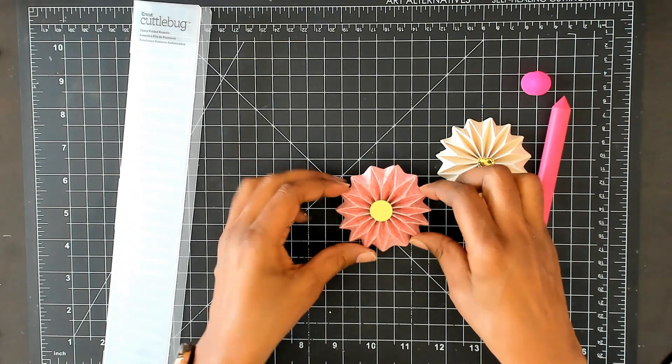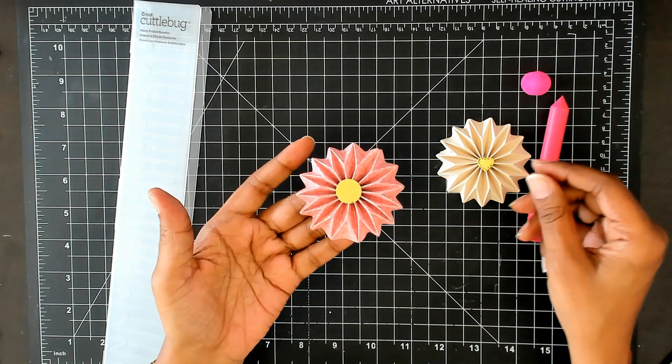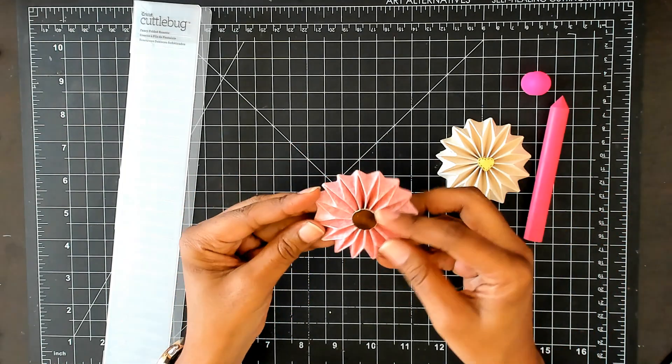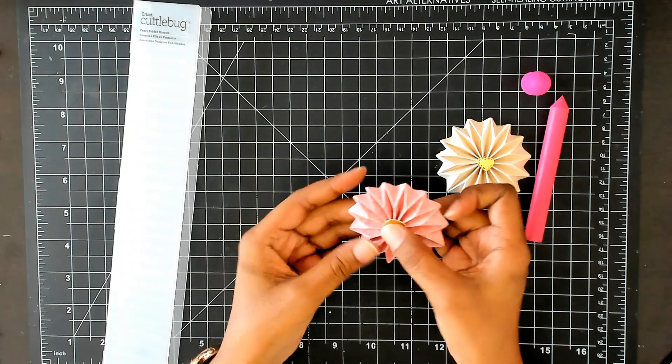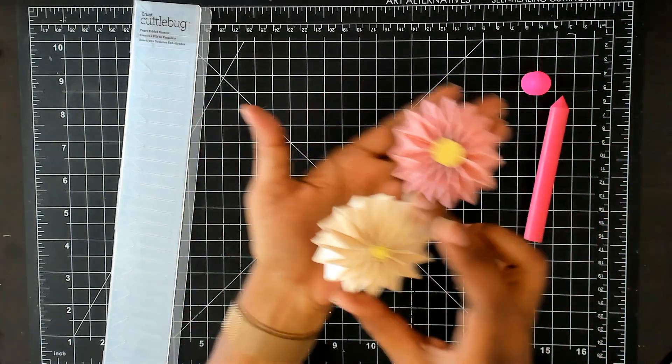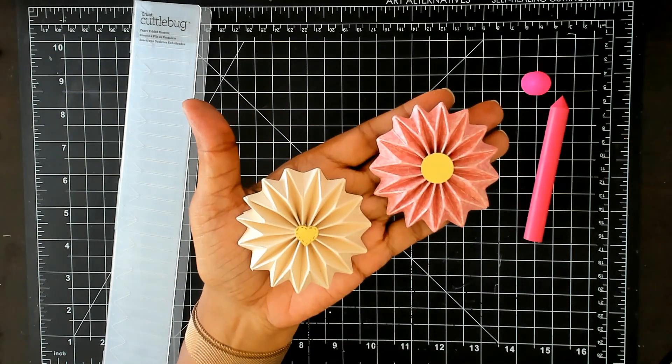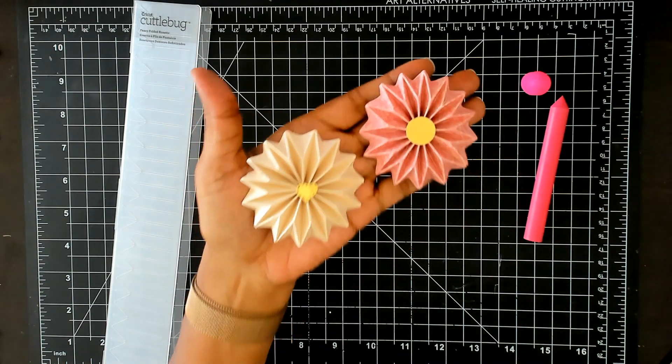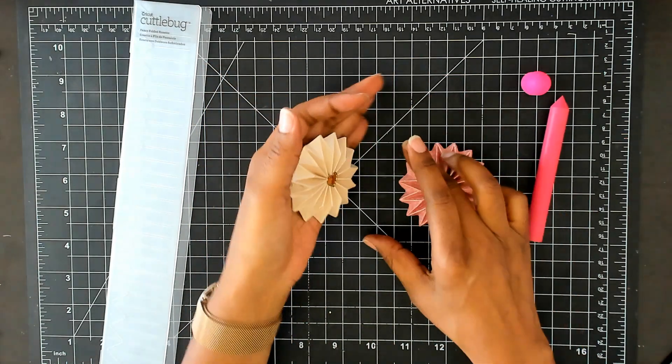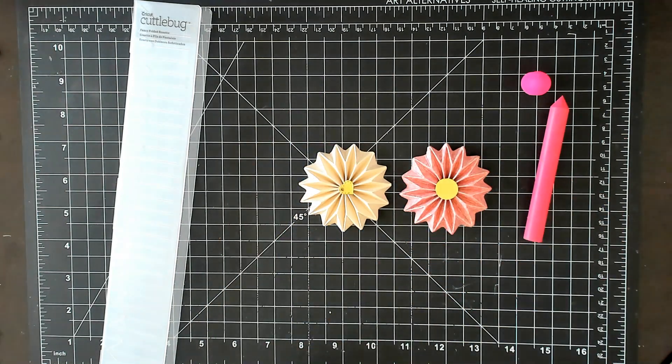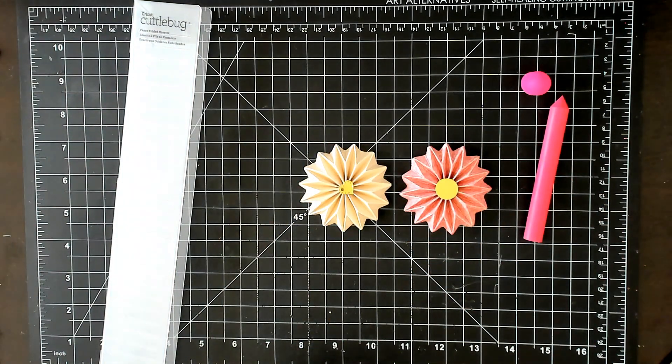And there you have it. Here's your rosette. And that's how it goes. Really easy, really pretty. I hope this helps.